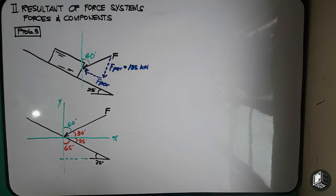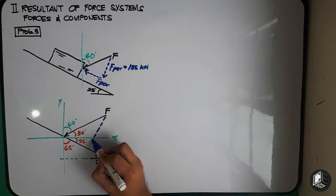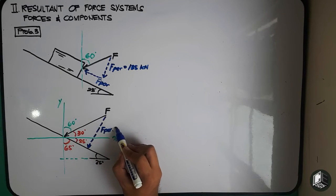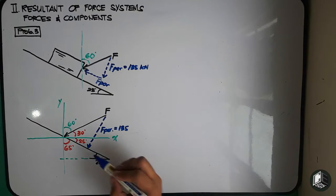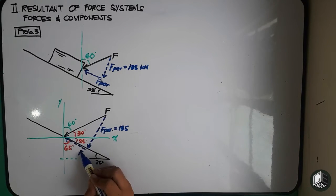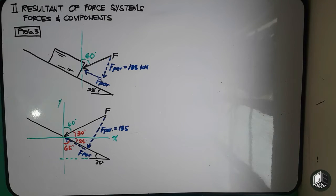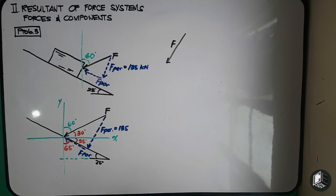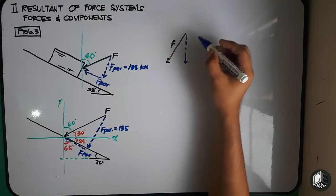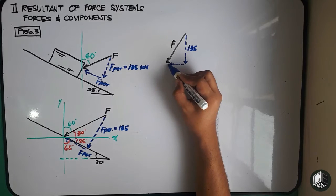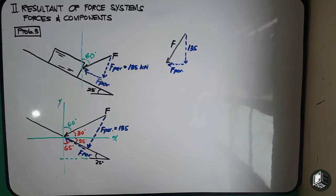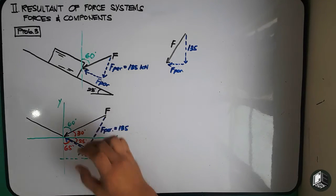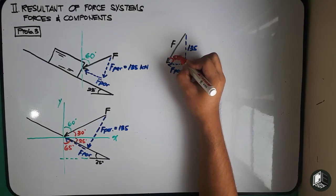The perpendicular force is here — F perpendicular equals 135 kN. And this is F parallel. We can form a right triangle where the hypotenuse is force F. F perpendicular is 135 kN, and F parallel is the other component. The angle between force F and F parallel is 30 plus 25 degrees, which equals 55 degrees.